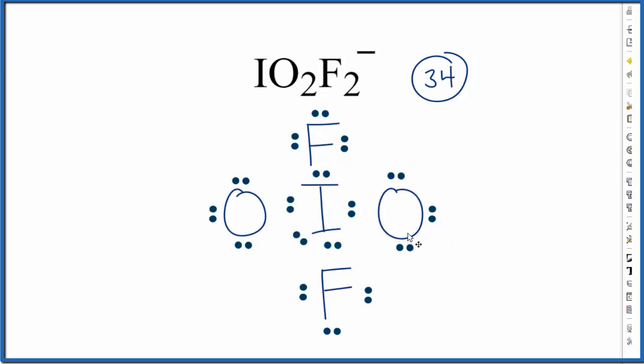It seems like a reasonable Lewis structure. Oxygens and fluorines all have eight valence electrons, they have to have an octet, they can't have more than eight so they're okay. And the iodine has 10, but that's okay, it can have an expanded octet.